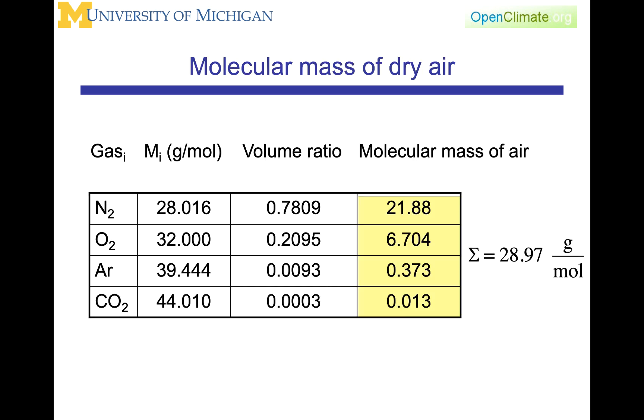The molecular mass of dry air is related to the molecular weight of each primary constituent and the volume ratio or percentage that the gas makes up. Nitrogen makes up about 78 percent, oxygen about 21 percent. Summing these weighted by their percentage, dry air is 28.97 grams per mole.